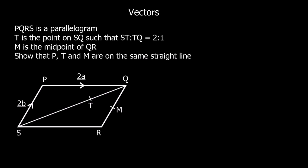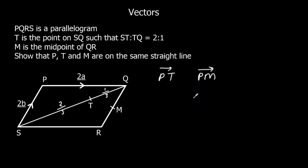In this video we're going to look at some of the harder vectors questions. PQRS is a parallelogram. T is the point on SQ such that ST to TQ is 2 to 1 — so two thirds and one third. M is the midpoint of QR. We need to show that P, T and M are on the same straight line. That means if we work out P to T and P to M, they both go through P, and if one is a multiple of the other, they are on the same straight line.